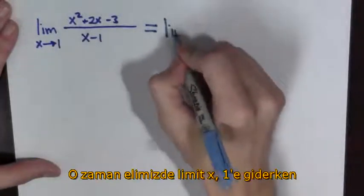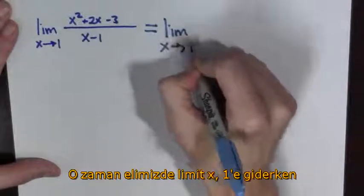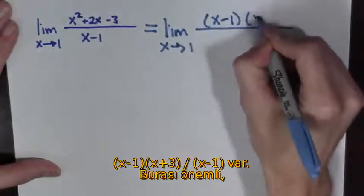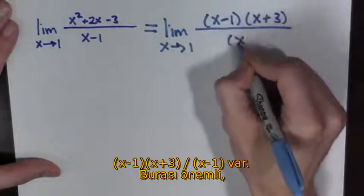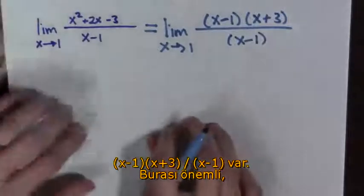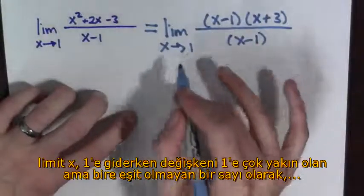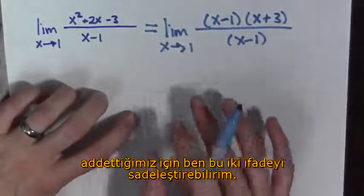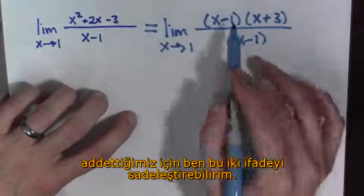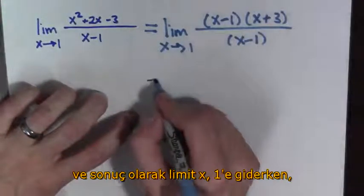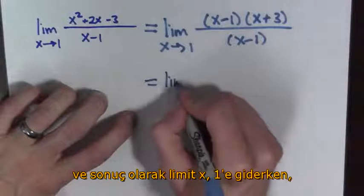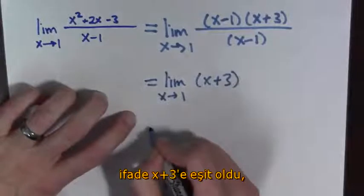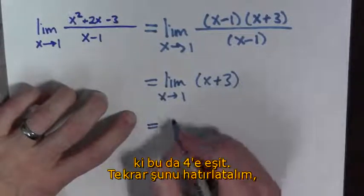So to compute this limit we have to factor the numerator. We have the limit as x goes to 1 of x minus 1 times x plus 3 all over x minus 1. At this point, because we're taking the limit as x goes to 1, we're assuming that x is not equal to 1. Hence we can cancel these terms out, and we get this is equal to the limit as x goes to 1 of x plus 3, which is equal to 4.